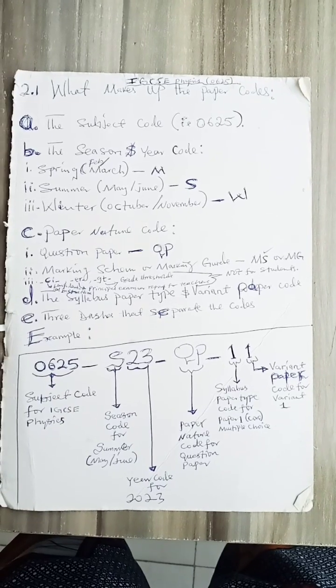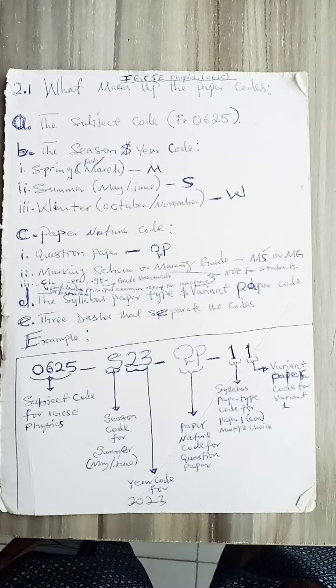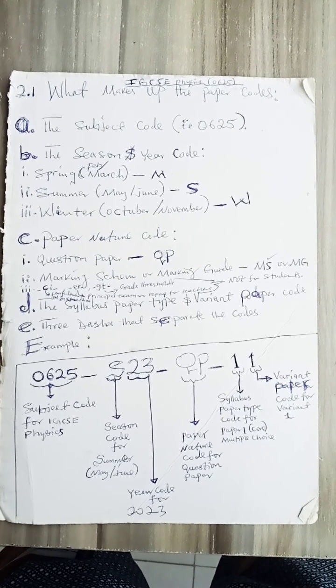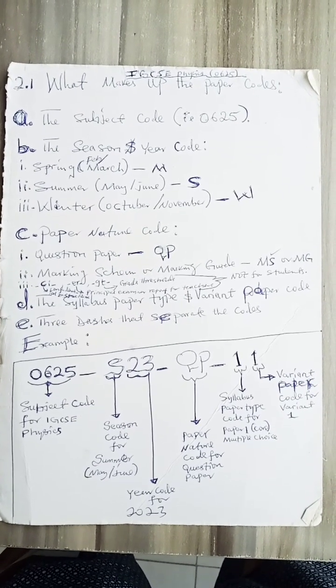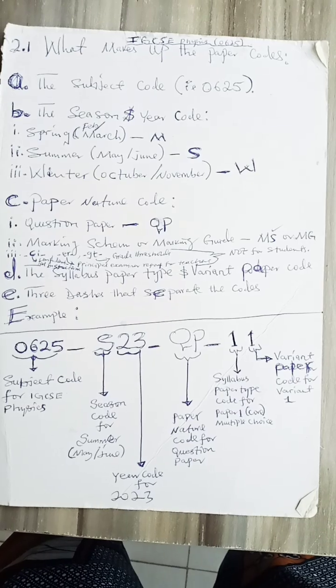Having gone through the first document, you need to know what makes up the paper codes. This is the summary of everything here. This one is a typical example of a paper code.